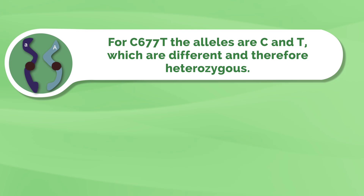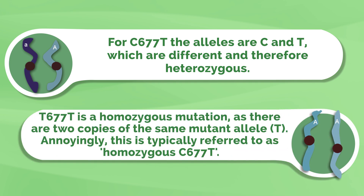For C677T, the alleles are C and T, which are different and therefore heterozygous. T677T is a homozygous mutation as there are two copies of the same mutant allele, which is T. Annoyingly, this is typically referred to as a homozygous C677T, which gets confusing.